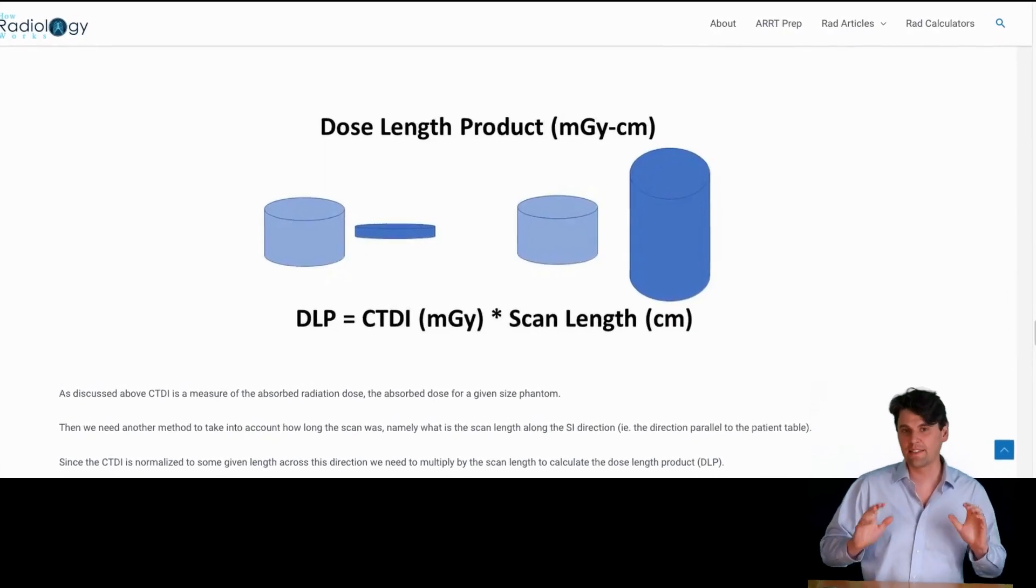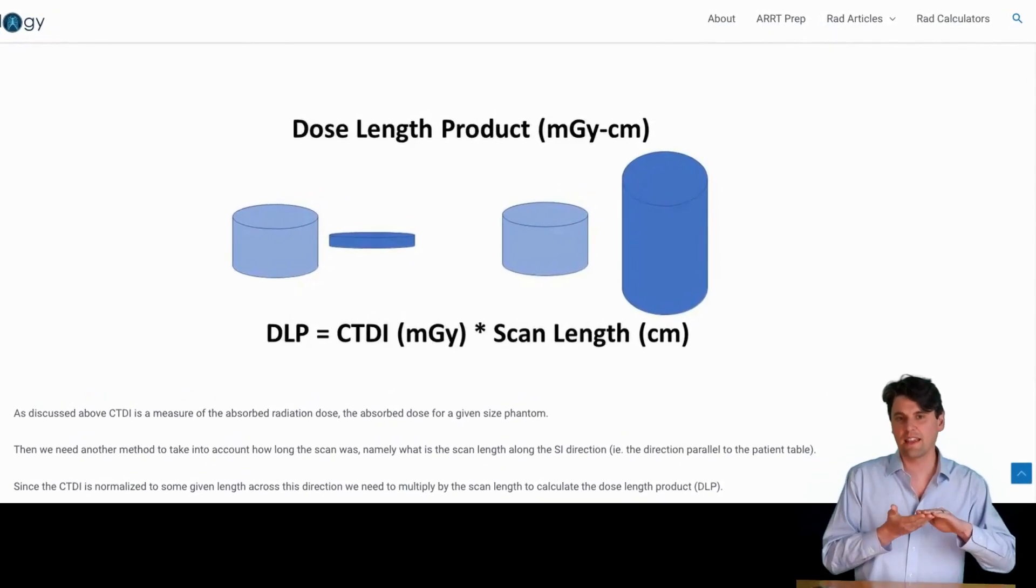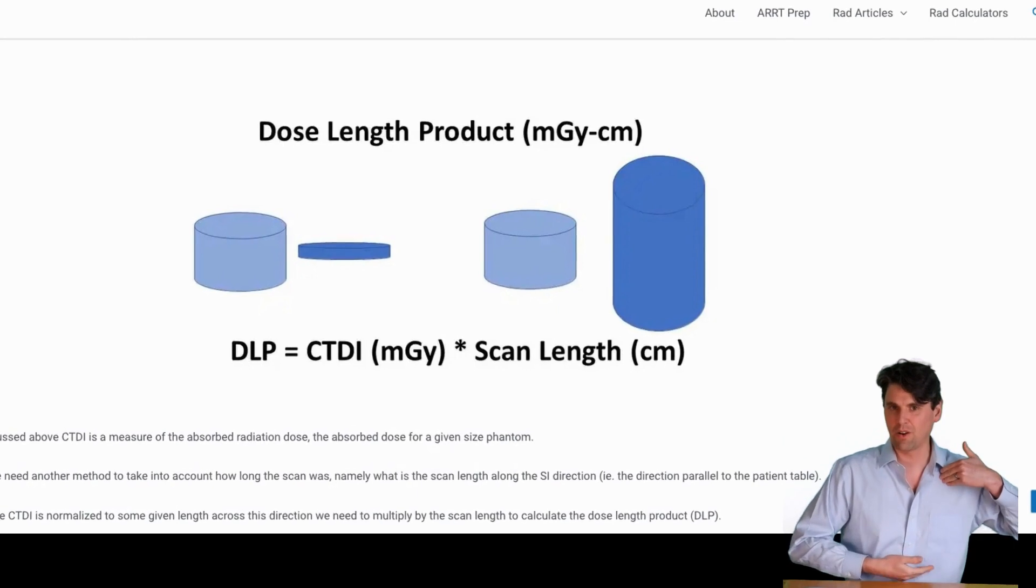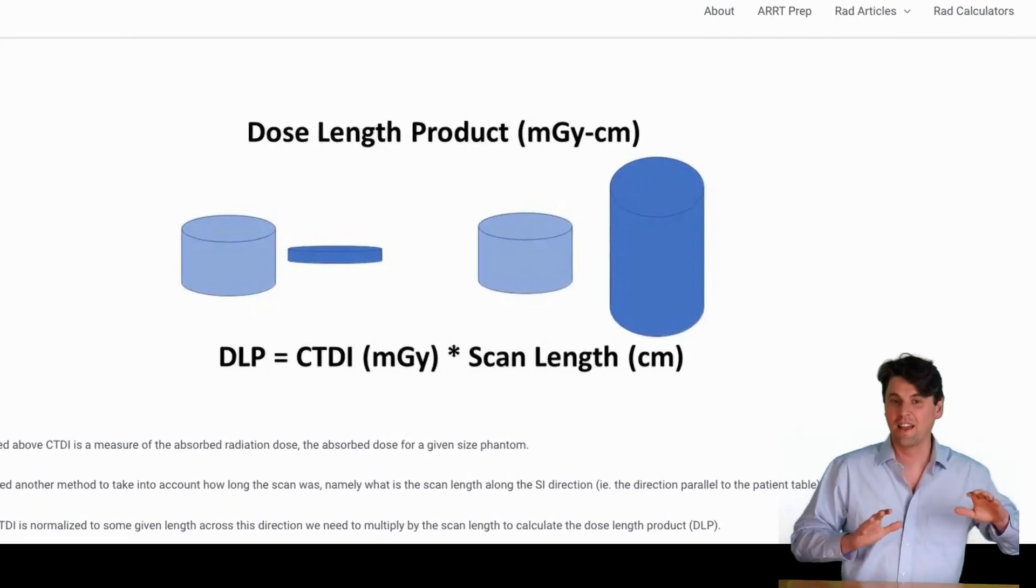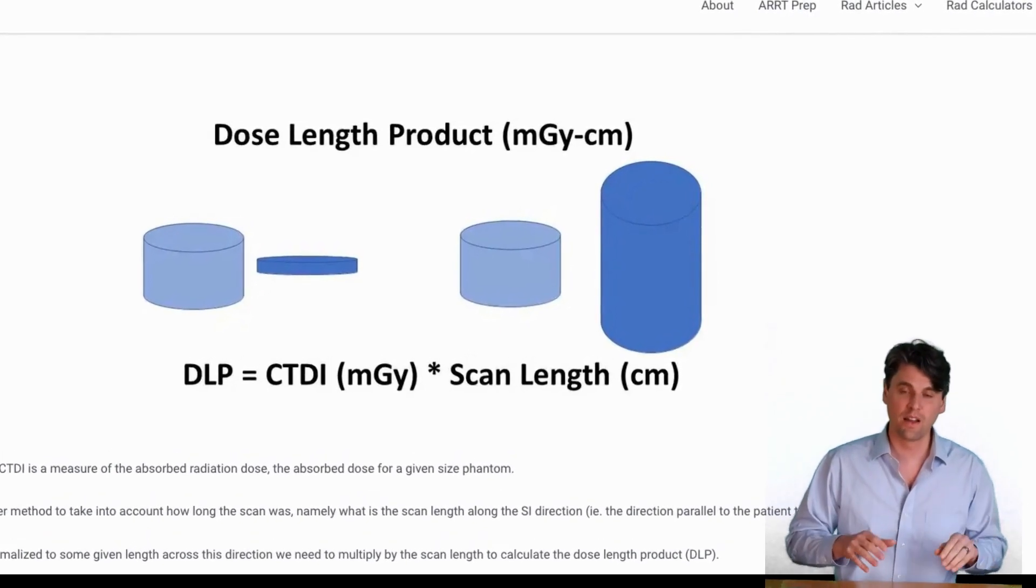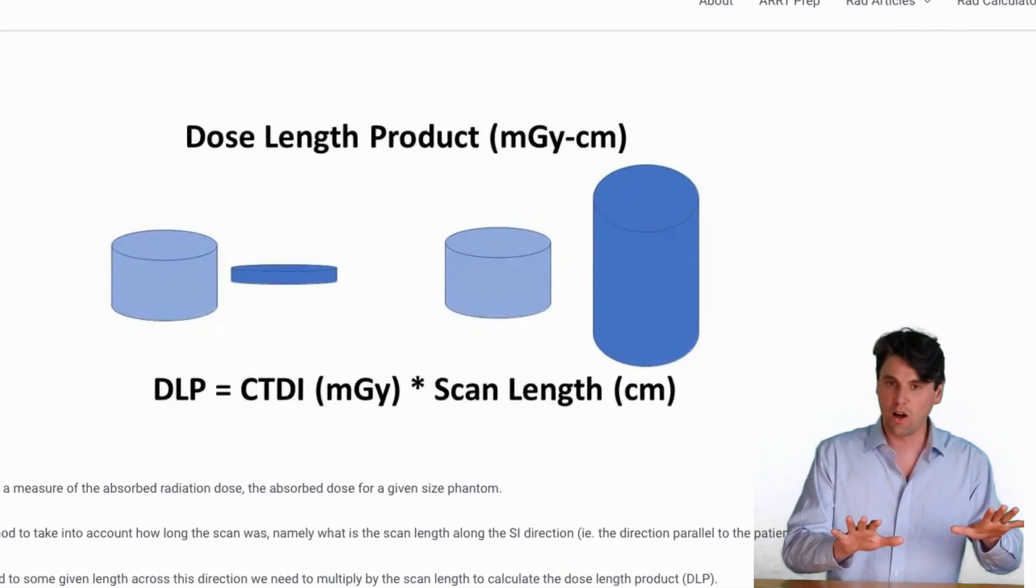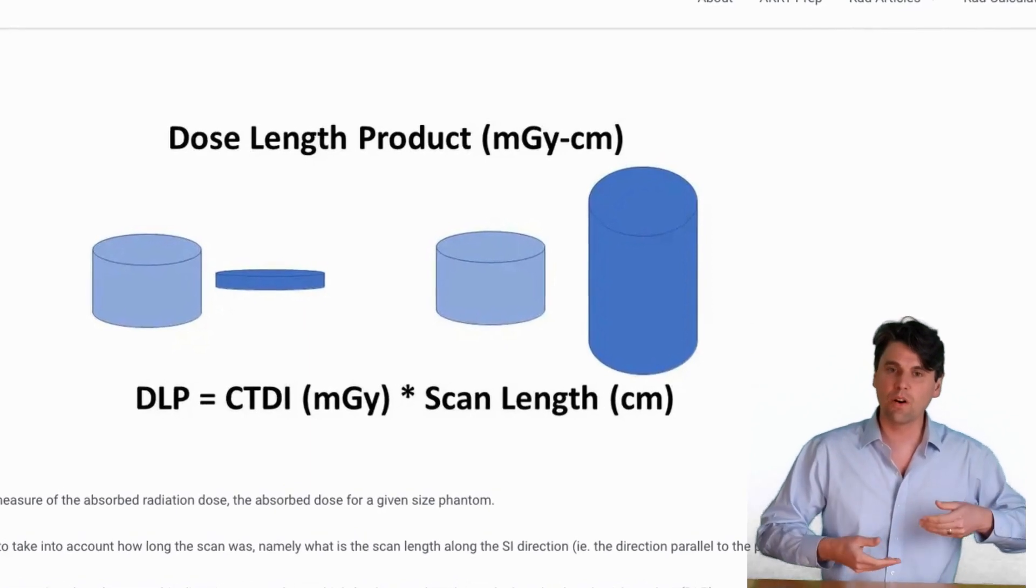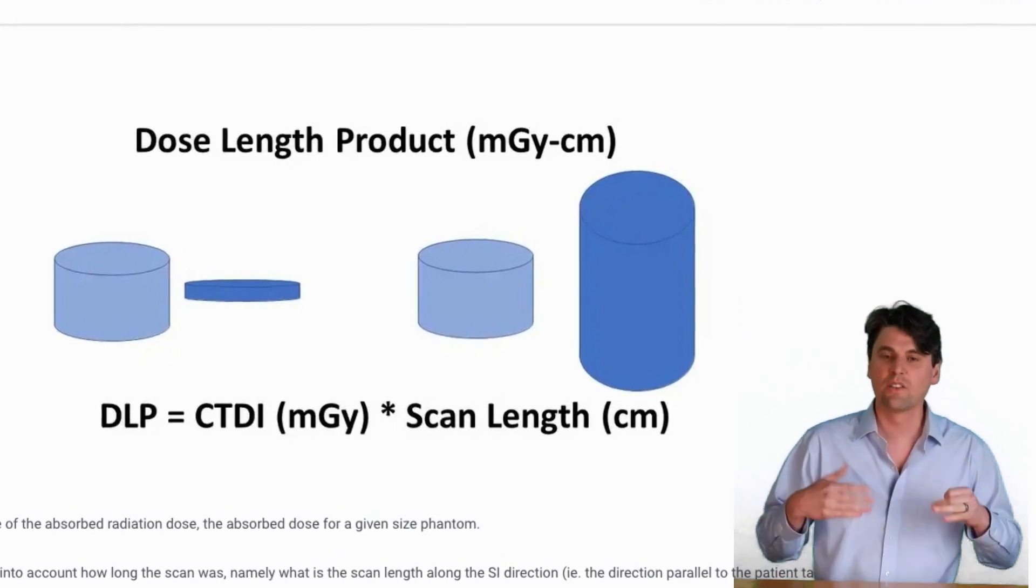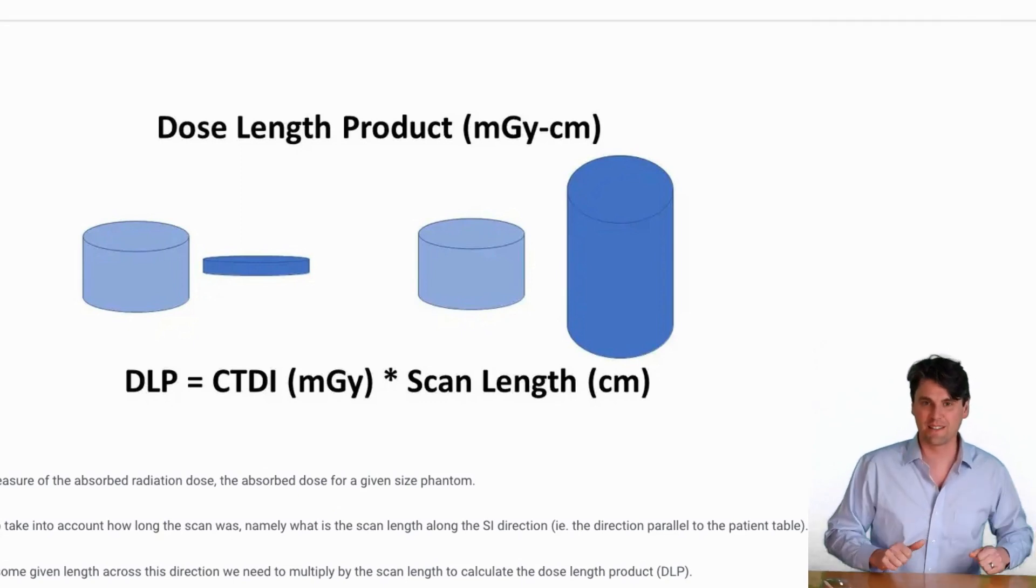We've talked about CTDI so far. CTDI is normalized to a given acquisition and doesn't take into account the length of the acquisition, or the amount of the patient along the Z direction or the superior-inferior direction that was irradiated. For that, we need a new unit, and we call that dose length product. For that, all we do is take the CTDI and multiply by how long of an area was exposed. If we take CTDI by the region that was exposed, that's the dose length product. We'll have units of milligray times centimeters, and we'll indicate the region that was exposed.